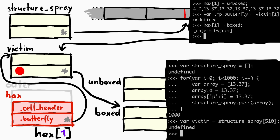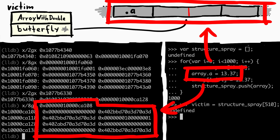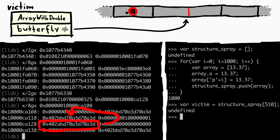We know that victim has a property .a. And we know from examining memory that the property .a is stored in the butterfly, on the left side of the butterfly. So from the point of view of the victim object, if you read or write to the .a property, you follow the butterfly address, go a bit to the left — 0x10 in fact — and this is where you find it.